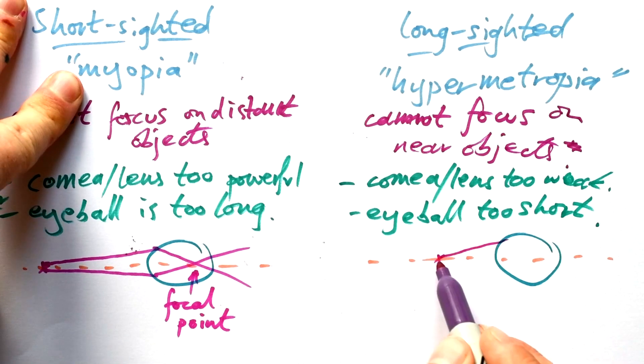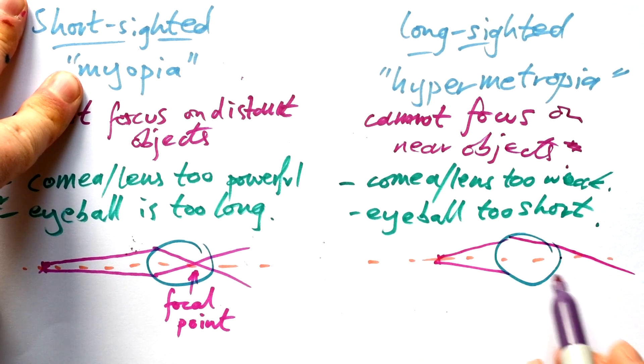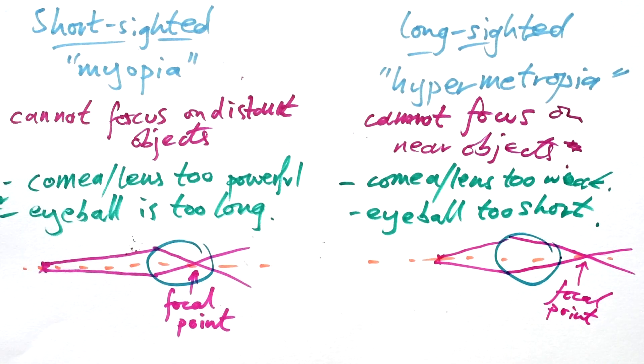With long-sightedness, light goes in and instead of meeting at the retina, they meet here. So that means again, that the light is not converging, the rays aren't converging, meeting at the retina. So therefore again, you're going to get a fuzzy image.